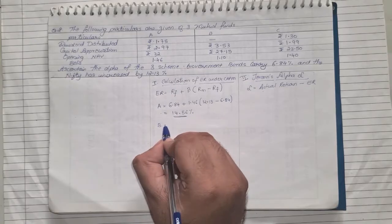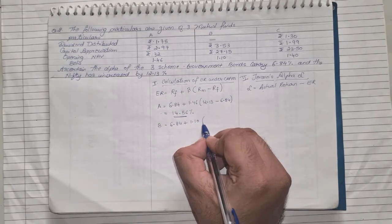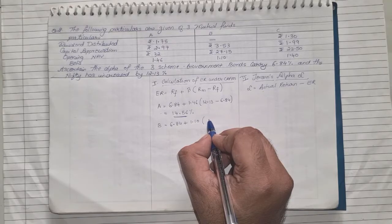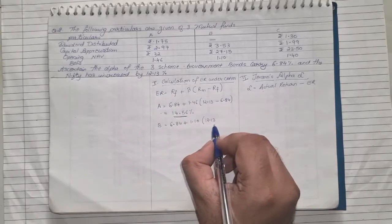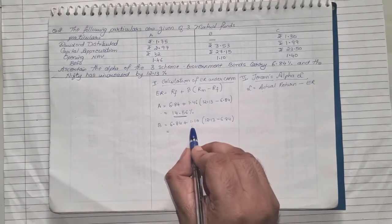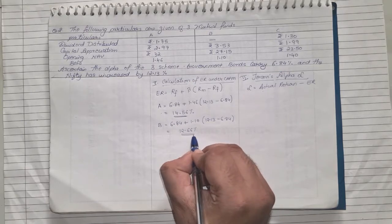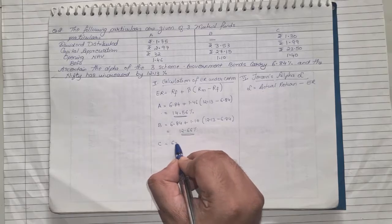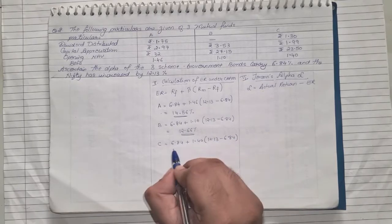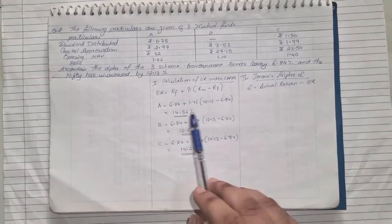Similarly for B, risk-free return will be 6.84 plus beta for B is 0.85 into 12.13 minus 6.84. Again we need to do the same thing: subtract, multiply with the beta, and add it to your risk-free return, and you will get the value approximately 12.66 percent. Similarly for scheme C, 6.84 plus the beta is 1.40, market return was 12.13 minus 6.84. Again you subtract, multiply, add, and your expected return should be approximately 14.25 percent.